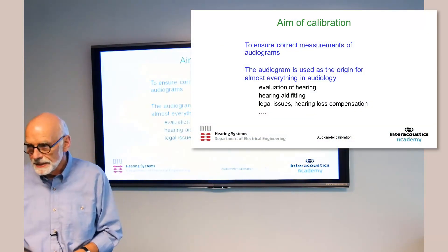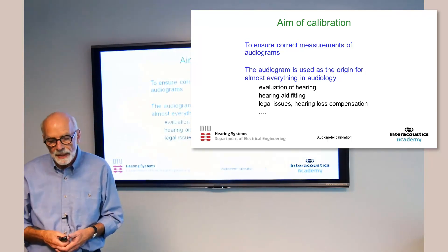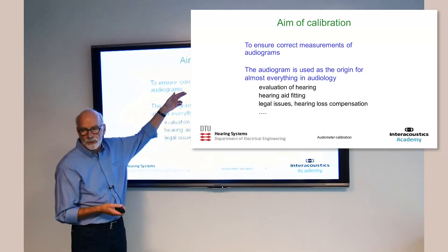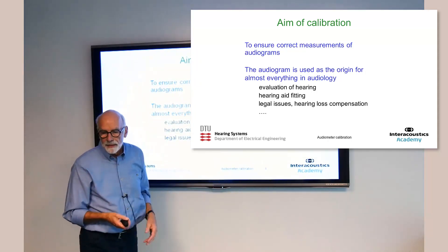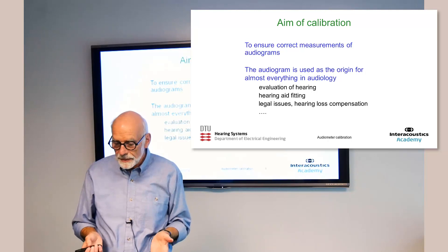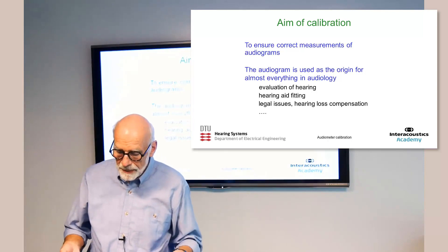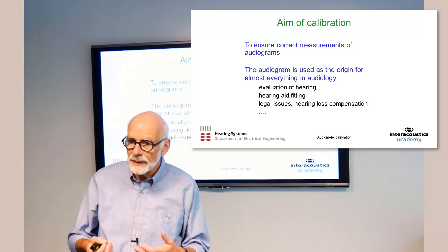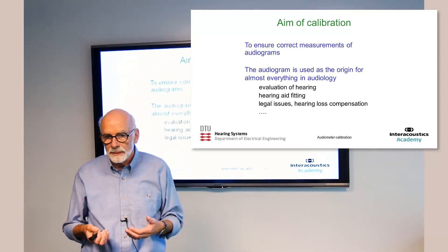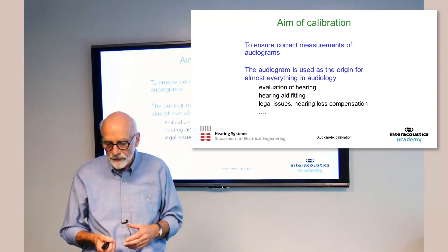The aim of calibration: why do we need to calibrate an audiometer? Of course, it is to ensure correct measurements of audiograms. Those audiograms are used as the origin for almost everything in audiology. The main purpose of an audiogram is to evaluate hearing — to find out whether you have a hearing loss or whether you don't.